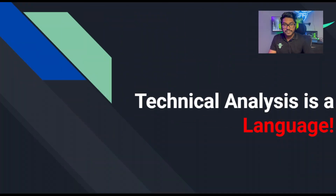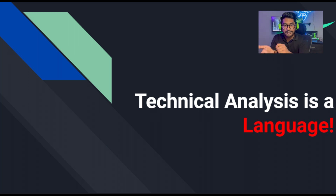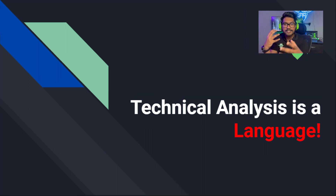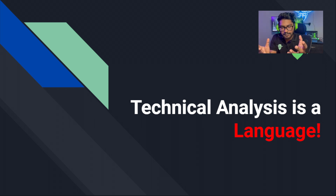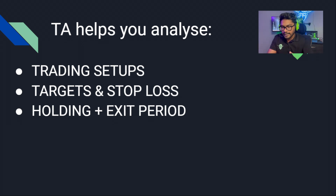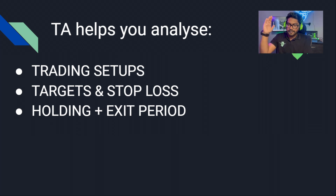Technical analysis is a language. In the real world, we use different methods to communicate — sign language, text, paper. Similarly, buyers and sellers communicate through technical analysis. We use data points, for example, trading setups — how you find a trade, how you execute a trade, your target, your stop loss, and your trade holding and exit decisions.